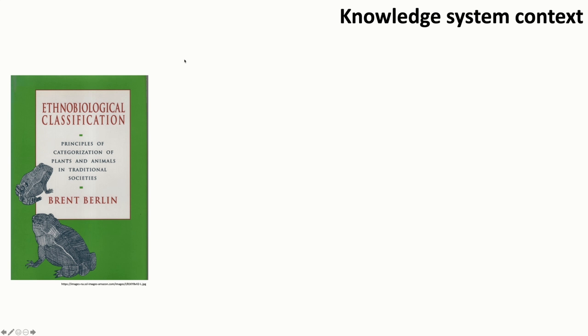I'd like to start by acknowledging that Western science by no means holds a monopoly on naming and classifying organisms, nor does it do so in a better or more complex way than do other knowledge systems. An important element to traditional knowledge systems includes knowledge about naming and classifying organisms. And while these systems do vary among cultures, ethnobiologist Brent Berlin developed a set of general principles that he argued apply across all cultures.